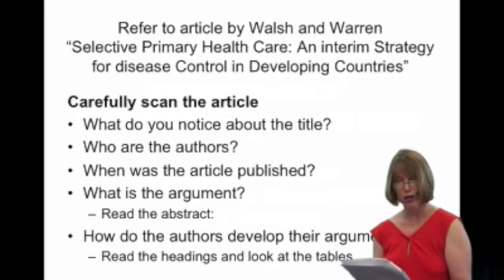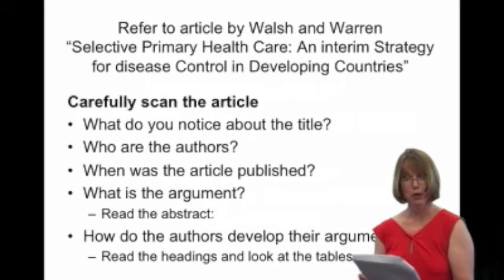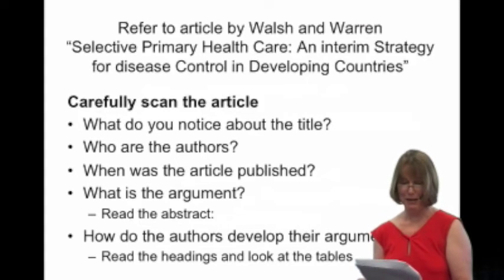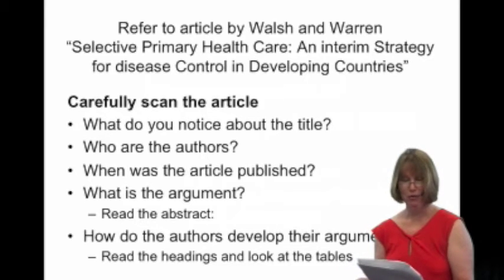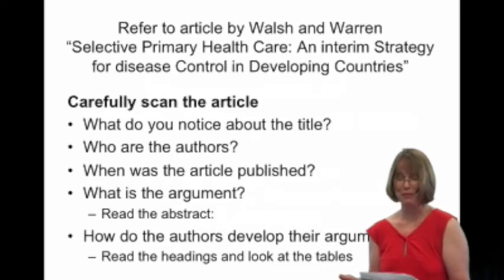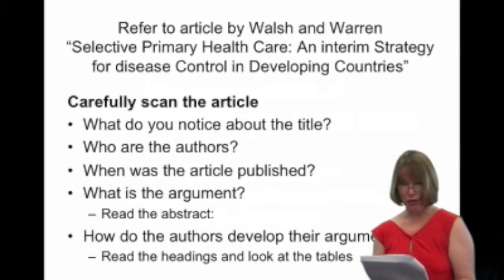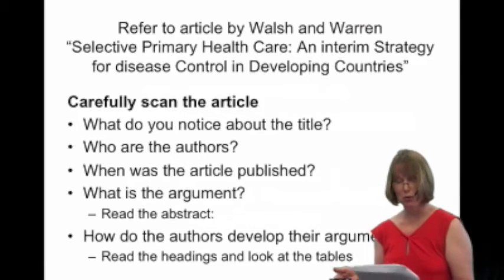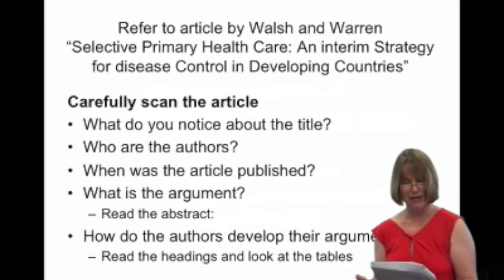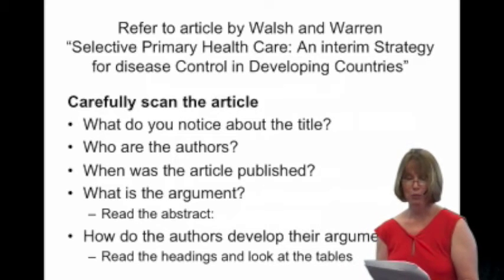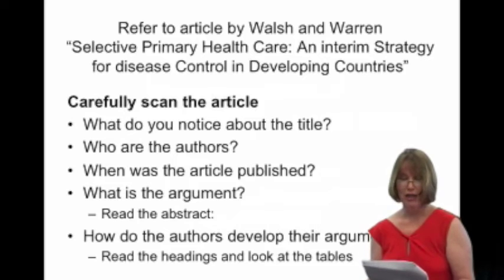The next example is worm infestation. Here, the prevalence is extremely high, thought to affect more than one billion people in the world. The mortality, however, is extremely low — less than 0.001 percent, so very few people die of worm infestation. In the 1970s, morbidity was thought to be quite low, though nowadays we know that worm infestation is associated with anaemia and reduced brain growth in children. But when this article was written, the morbidity from worm infestation was considered low, and the feasibility of control was fair.